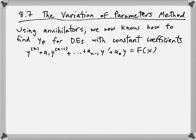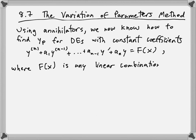Let's backtrack a little bit to explain where we are. Using annihilators — referring to section 8.3 — we now know how to find Yp for differential equations with constant coefficients, where F(x) is any linear combination of x^k e^(ax), x^k e^(ax) sin(bx), or x^k e^(ax) cos(bx).